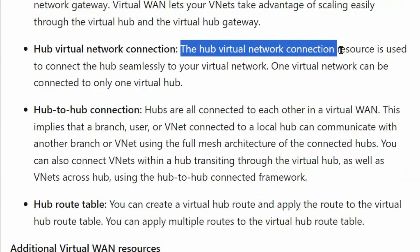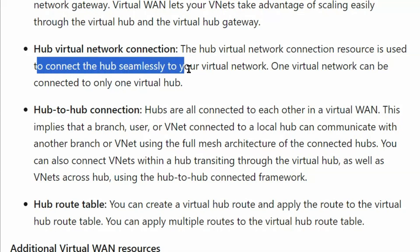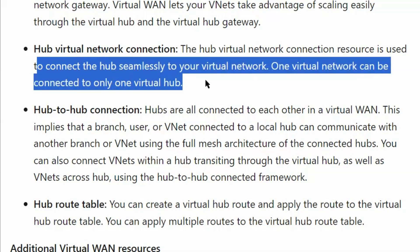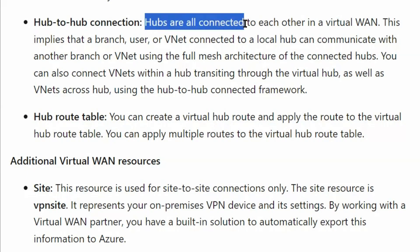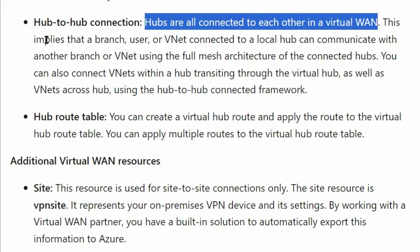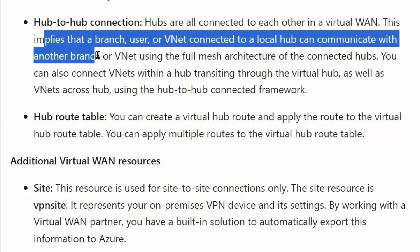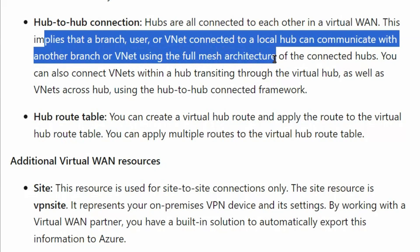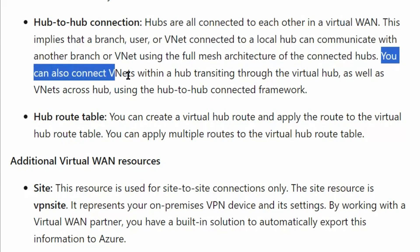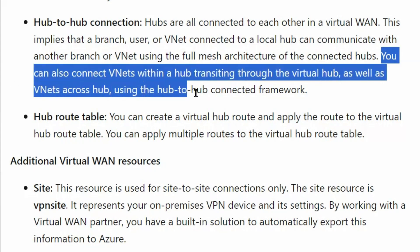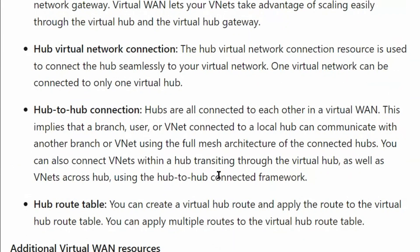Hub virtual network connection: the hub virtual network connection resource is used to connect the hub seamlessly to your virtual network. One virtual network can be connected to only one virtual hub. Next is hub-to-hub connection: hubs are all connected to each other in virtual WAN. This implies that a branch or VNet connected to the local hub can communicate with another branch or VNet using the full mesh architecture of the connected hubs. Therefore, the virtual WAN solution is helpful in this case and can be used to ensure branch-to-branch connectivity.